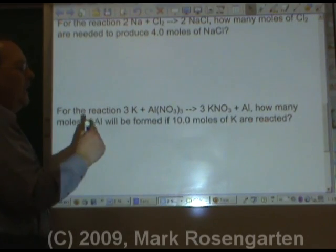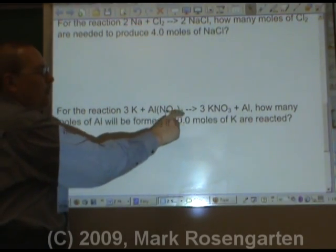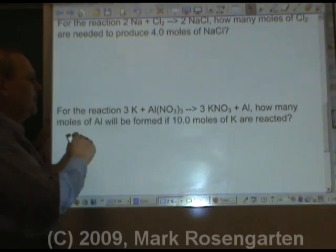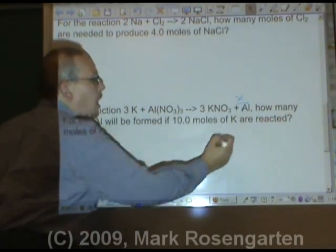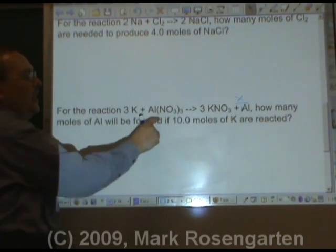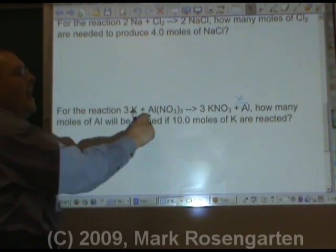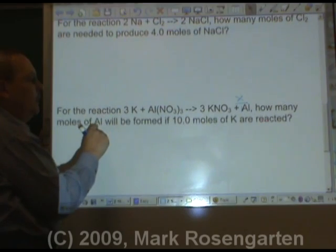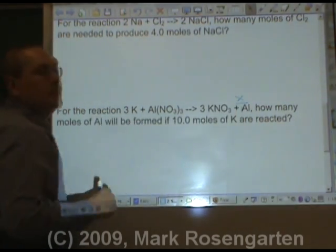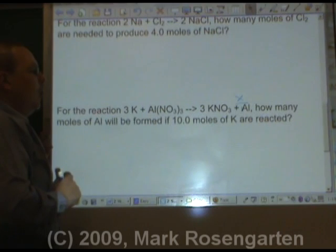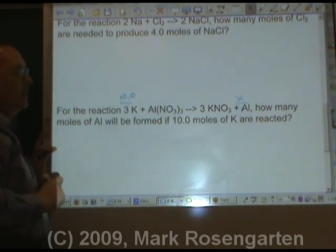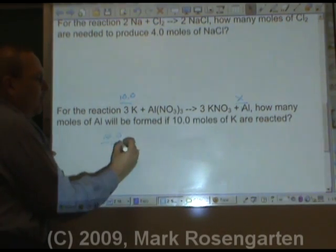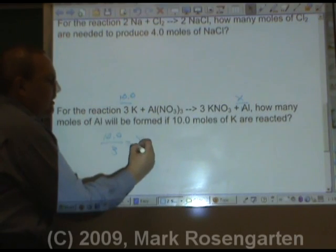For the reaction, 3K plus Al(NO3)3 forms 3KNO3 plus Al. How many moles of Al? Now, why am I putting the X over Al and not this Al? Because this is Al, not Al(NO3)3. So I have to put the X over the aluminum. And there's a coefficient of one since there's no coefficient written. Will be formed if 10.0 moles of K are reactive. So, 10.0 is to 3 as X is to 1.